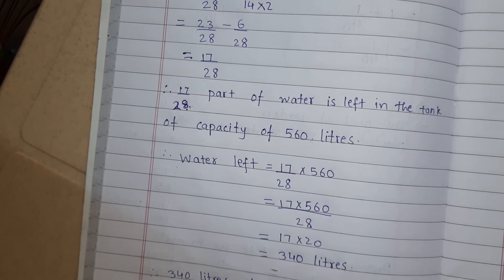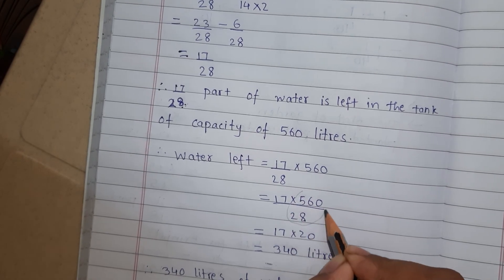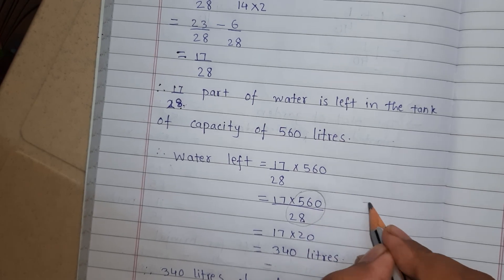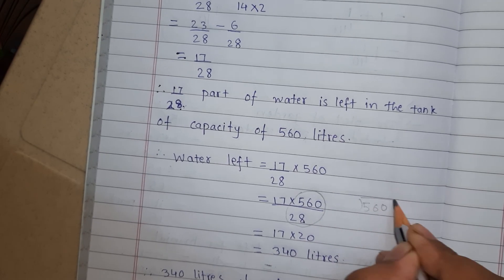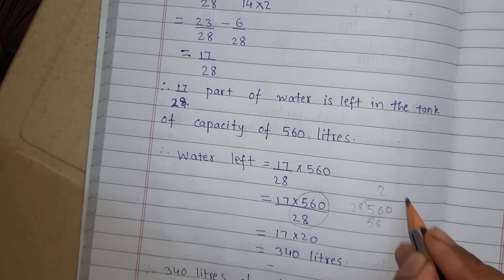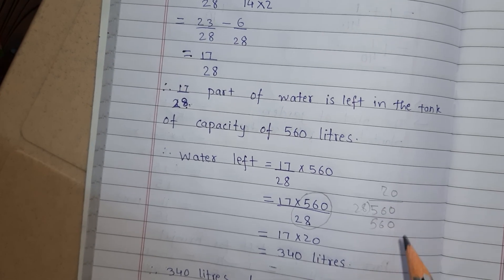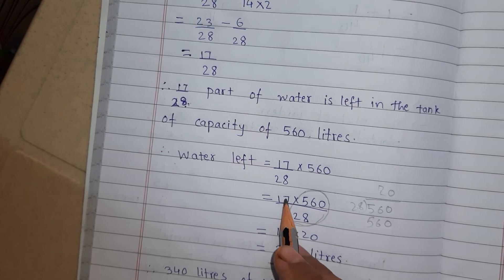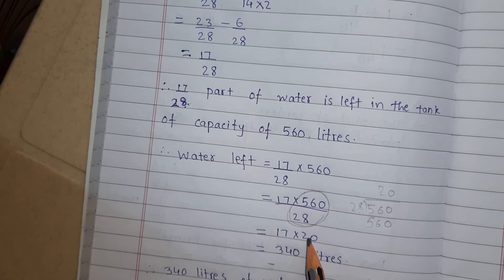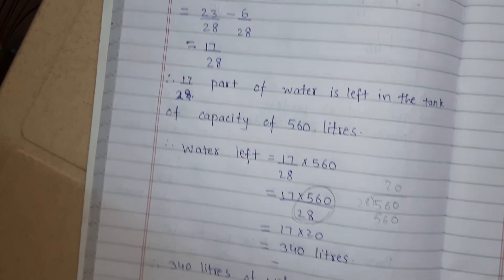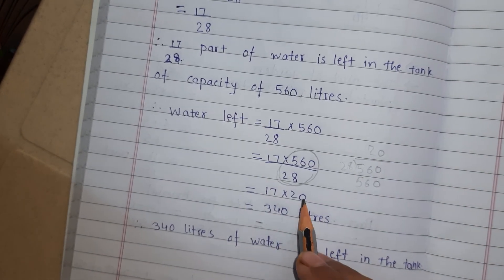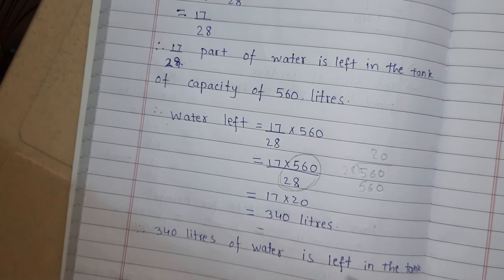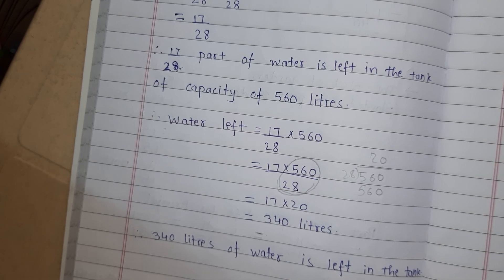28, 560 divided by 28. So 28, 2's are 56. And 28, 0's are 0. So this answer is 20. So what remains now? 17 multiplied by 20. And 17, 2's are 34. And this is 0. So answer is 340 liters of water is left in the tank. Understood?